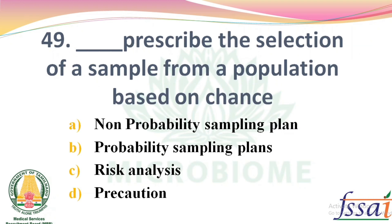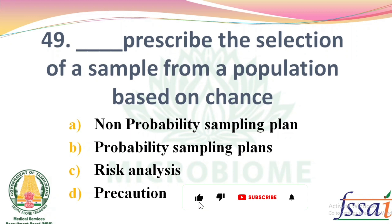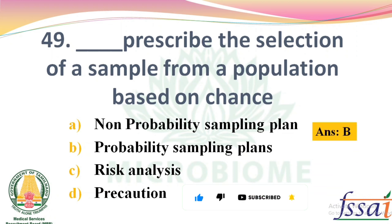Dash prescribes the selection of a sample from a population based on chance. Options: Non-probability sampling plan, Probability sampling plan, Risk analysis, Precaution. The right answer: Option B, Probability sampling plan.